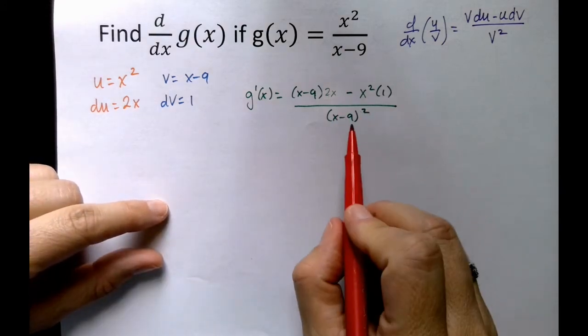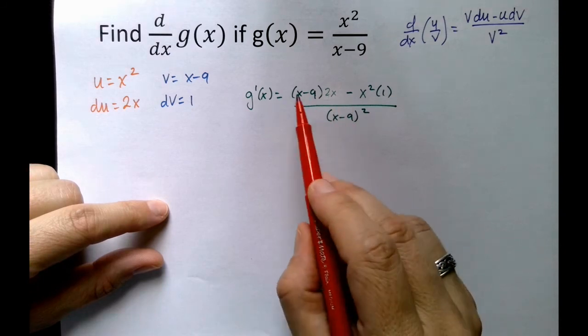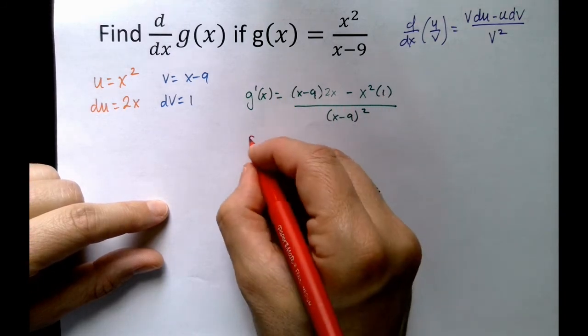So I am not going to do anything to the denominator. All you're going to do is distribute out the numerator and see if anything cancels.